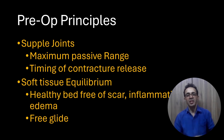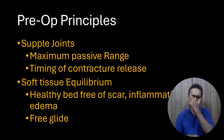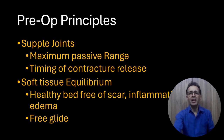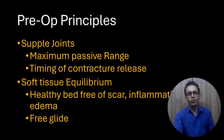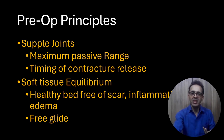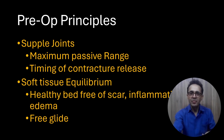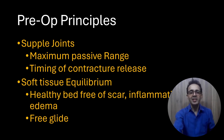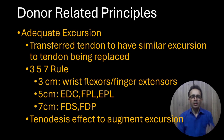The second pre-operative principle is optimal soft tissue equilibrium, meaning we should have a healthy bed free of scar tissue, inflammation, and edema. If there is inflammation or edema, tendon gliding is not smooth. If soft tissue injury is present, allow enough time for inflammation and edema to subside. If the transfer must pass through a severely scarred area, excise the scar, replace it with a flap, allow healing, and then plan the tendon transfer through a healthier bed.